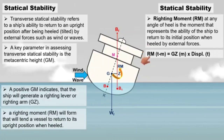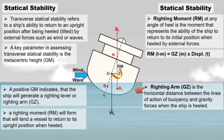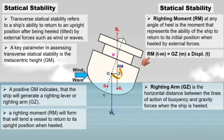Righting moment is equal to righting lever times the ship's displacement, and it is expressed in ton-meters. Righting lever, GZ, is the horizontal distance between the lines of action of buoyancy and gravity forces when the ship is heeled. A larger GZ indicates a greater righting moment, and it corresponds to a stronger tendency for the ship to right itself.